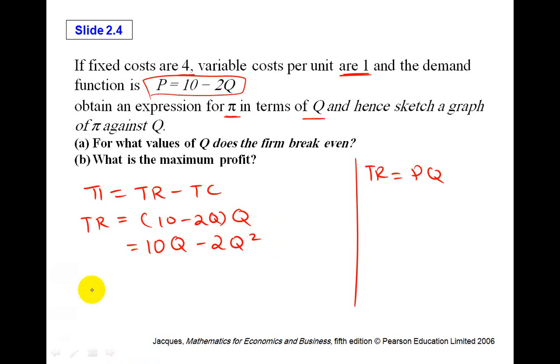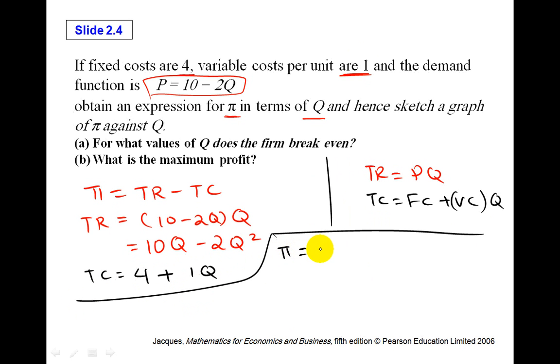Now let's talk about total cost. You know that total cost equals to fixed cost plus variable cost multiplied by the quantity. So total cost equals to, what's our fixed cost here? Fixed costs are 4, plus the variable cost is 1. So it will be 1 times Q. It will just give you Q.